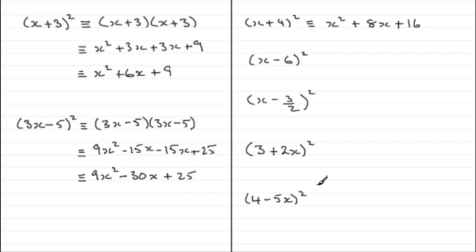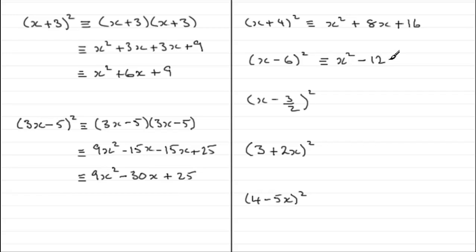Welcome back. Let's run through these. First one: square the first term to get x squared; double the product — the product is x times minus 6 which is minus 6x, doubled gives minus 12x; then square the last term, minus 6 squared is plus 36.